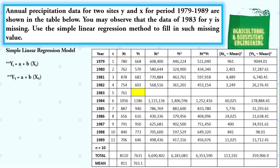However, we still don't know the values for A and B, but we have the necessary formulas to solve for them. The formula to solve for B is Rxy multiplied by the unbiased standard deviation of Y over the unbiased standard deviation of X. We already solved these values, so we simply substitute, giving us B equal to 1.4564.